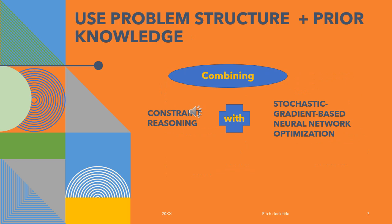In a typical DRNets situation, we use the problem structure with prior knowledge. And we do this by combining the constraint reasoning along with the stochastic gradient-based neural network optimization.